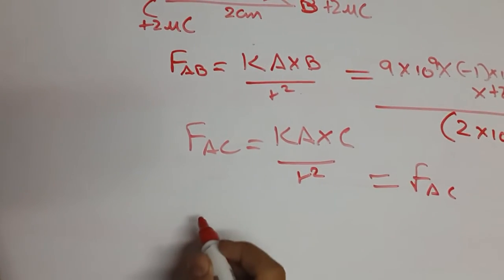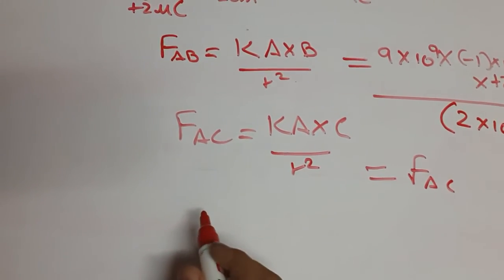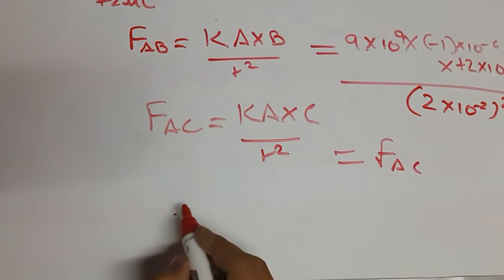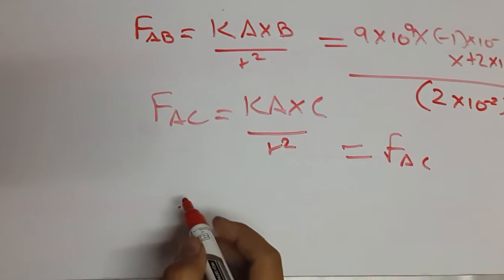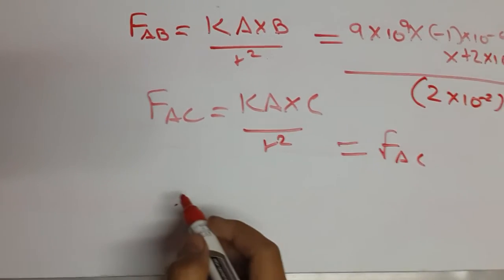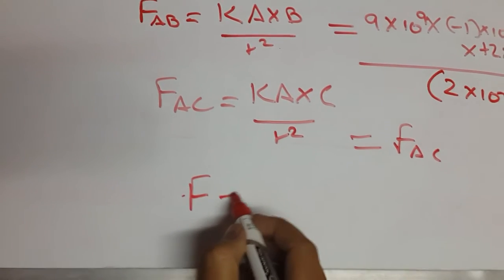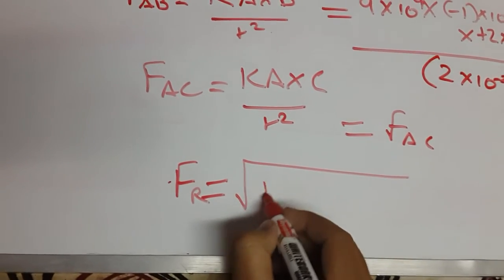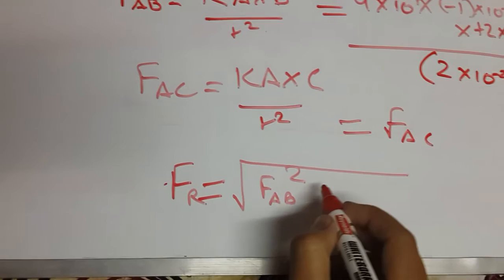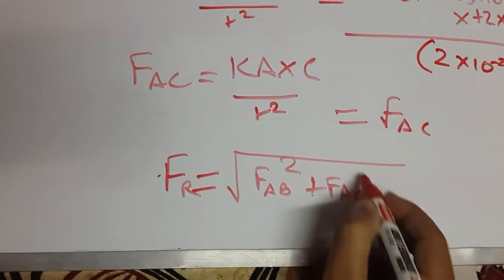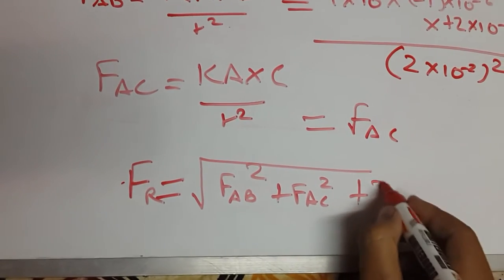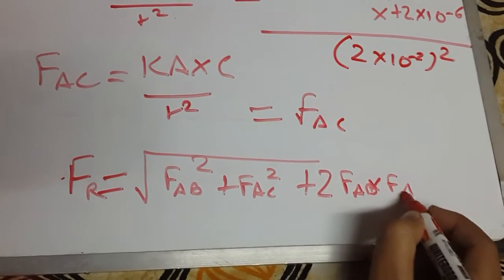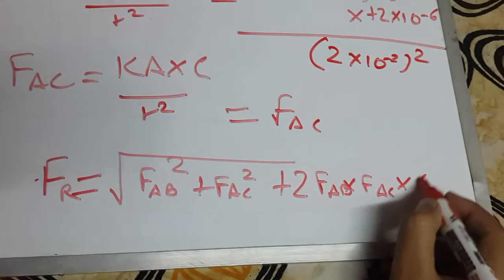Just use the vector form to get the resultant force on A. There is not one charge, there are many charges. You can see that there are two charges. So in the last we will just get the total or resultant force which is exerted due to B and C on A. So we will use a vector form which is total force resultant equals to force 1 which is QAB square plus force 2 which is QAC square plus 2 force AB into force AC into cos theta.